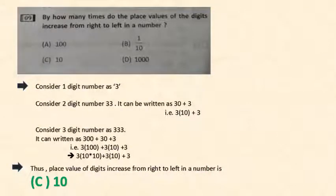Here they have asked by how many times do the place values of digits increase from right to left in a number. Let's consider the one digit number as 3. Next take a two digit number as 33. So 33 could be written as 30 plus 3 which is nothing but 3 of 10 plus 3. This is nothing but 3 into 100 plus 3 into 10 plus 3. 3 into 100 could also be written as 3 of 10 into 10 plus 3 of 10 plus 3. Thus the place value of digits increase from right to left in a number is 10.